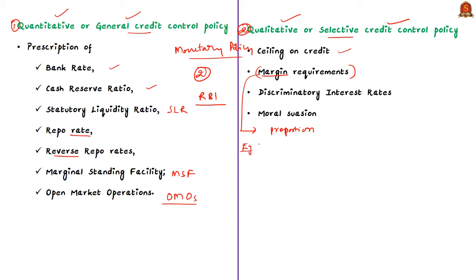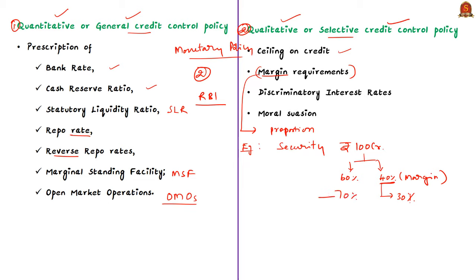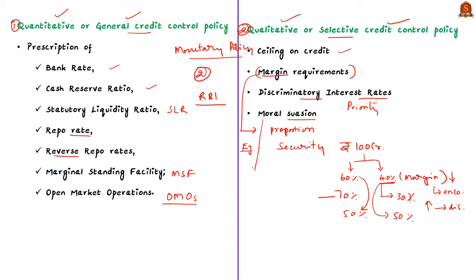To understand margin requirements, consider this example: if a person goes to the bank with a collateral security of 100 crores, the bank may not give 100% of the collateral value and may extend 60%, with the remaining 40% known as the margin. If the margin is reduced from 40% to 30%, the borrower may get 70% of the value of security. If the margin is increased from 40% to 50%, the borrower may get only 50% of the value of security. So, if margin against a particular security is reduced, it increases credit flow to a particular sector, and if increased, it decreases credit flow. The correct answer for the monetary policy question is option C — 1 and 2. For the quantitative credit control question, cash reserve ratio and reverse repo rate constitute part of quantitative credit control policy, so the answer is option D — 1 and 4.